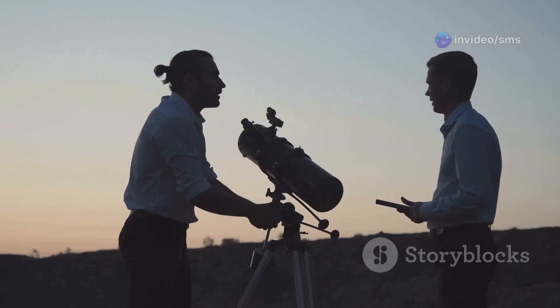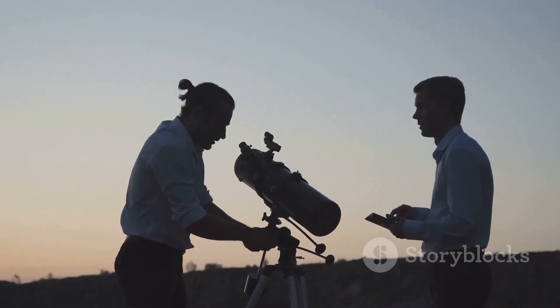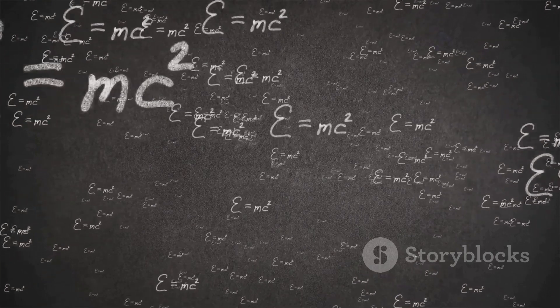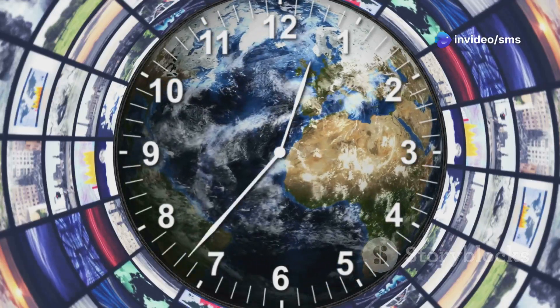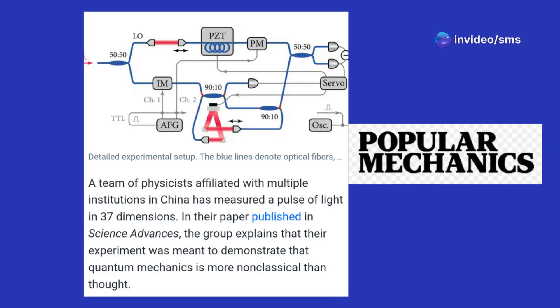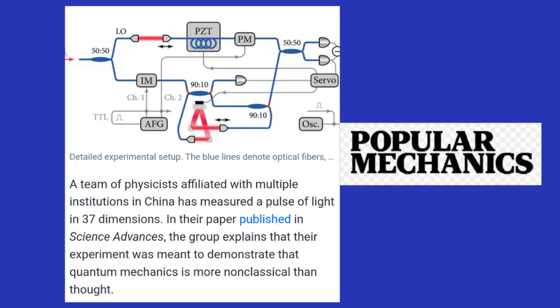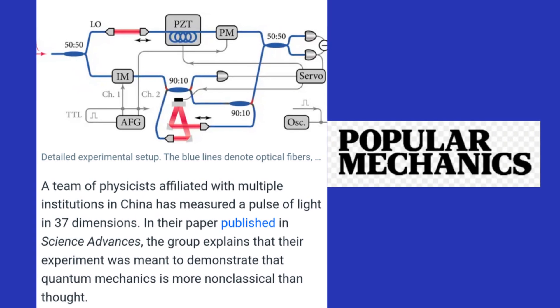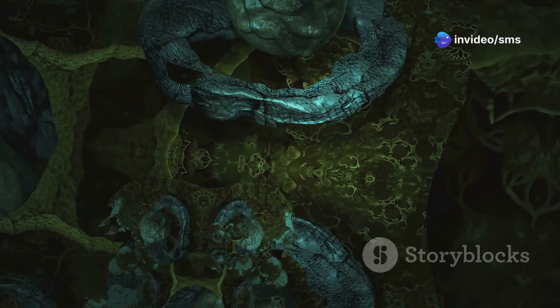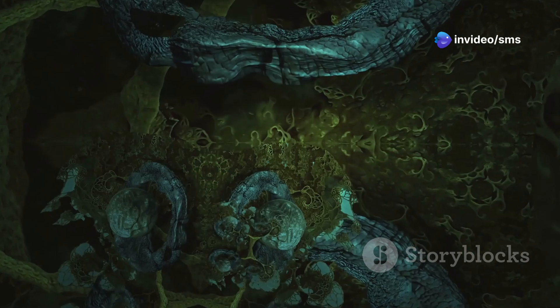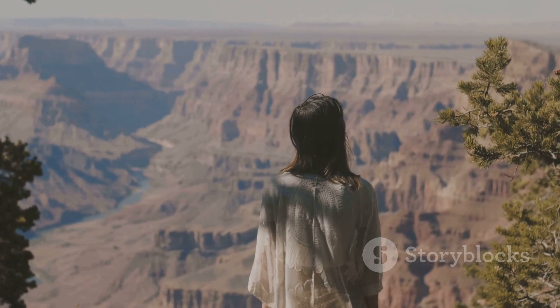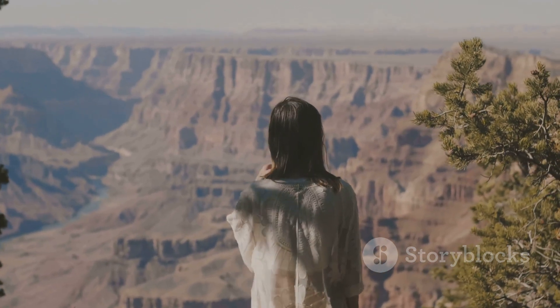As we embark on this exercise to explore the possibility of a universal consciousness, it is essential to first grasp the complexity of the dimensions we live in. Scientists have long pondered the nature of our universe and its many layers. According to an article from Popular Mechanics, the study of quantum mechanics has revealed that our universe may consist of up to 37 dimensions.